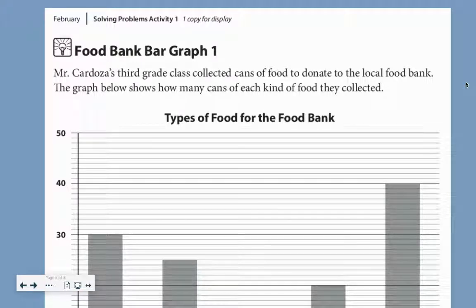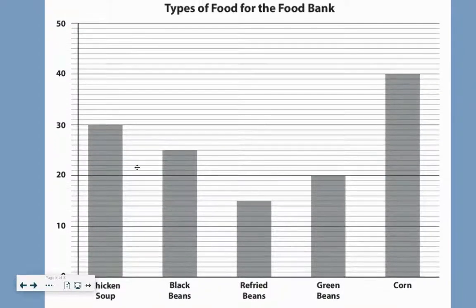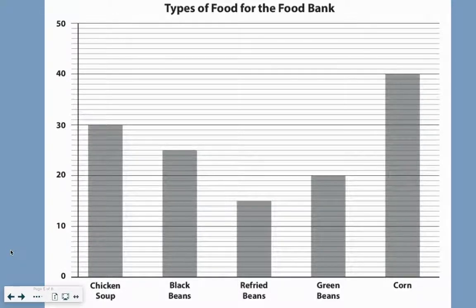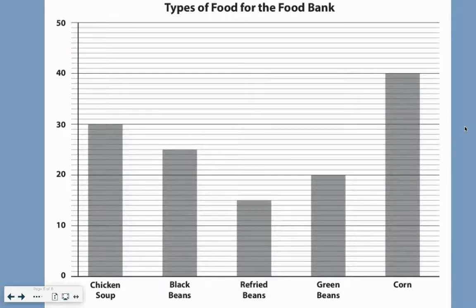We're going to take a look at some graphs today. This is our first graph. You can see it has what it's talking about at the top — it says 'Types of food for the food bank.' Go ahead and take a minute, make some observations about this graph. What do you notice? Some things to notice might be the numbers going up over here, the words down here, the bars, or the lines. All of those things are important and all of those tell us something.